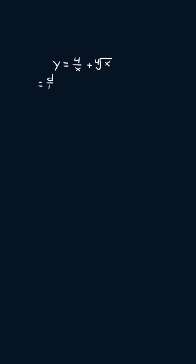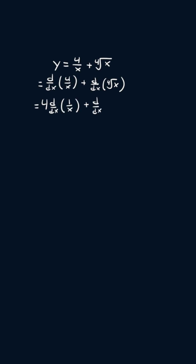I'm going to start by applying the sum and difference rule, so we're going to get the derivative of four over x plus the derivative of the fourth root of x. Then I'm going to take out the constant, so we'll get four times the derivative of one over x plus the derivative of the fourth root of x.